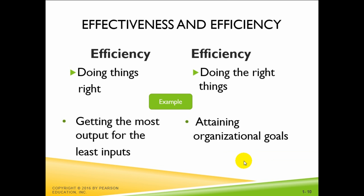Efficiency refers to getting the most output from the least amount of inputs or resources. Managers deal with scarce resources, including people, money, and equipment, and want to use those resources efficiently. Effectiveness is often described as doing the right thing — that is, doing those work activities that would result in achieving the goals. Whereas efficiency concerns the means of getting things done, effectiveness concerns the ends, or attainment of organizational goals.